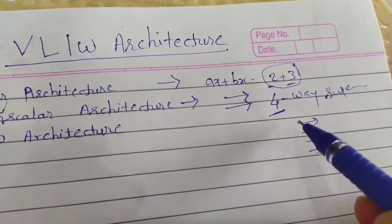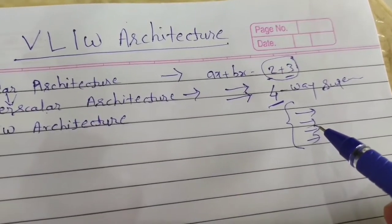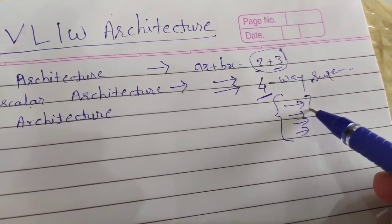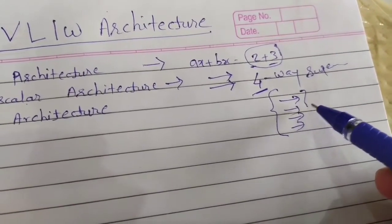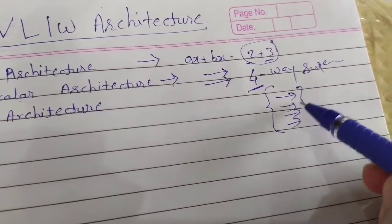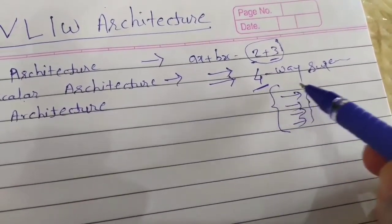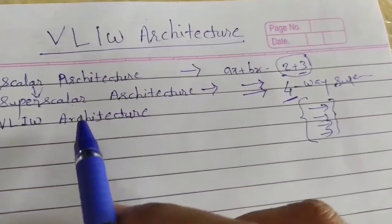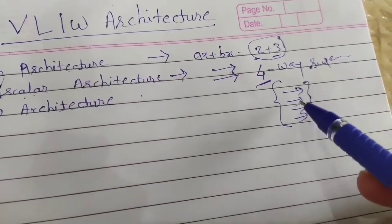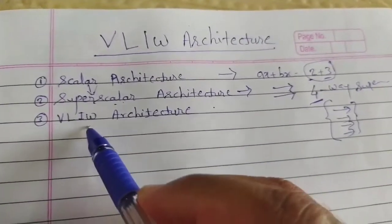These four pipelines will perform four operations together. But the problem with superscalar architecture is that if these instructions are linked together — if they have some dependency on data or resources — then we cannot perform all four operations together. So how many operations we can perform together is limited in superscalar architecture, as there can be dependency among the different operations. The solution to that is VLIW architecture.